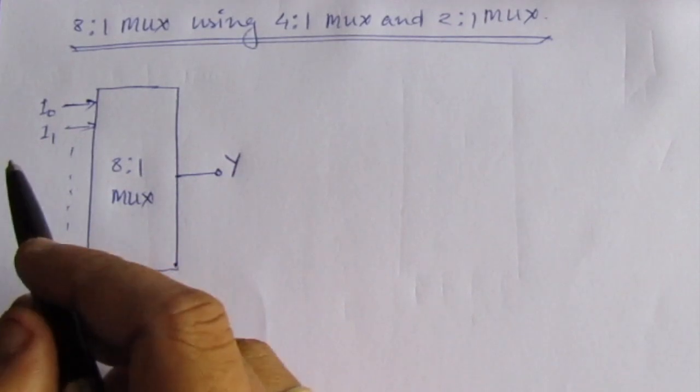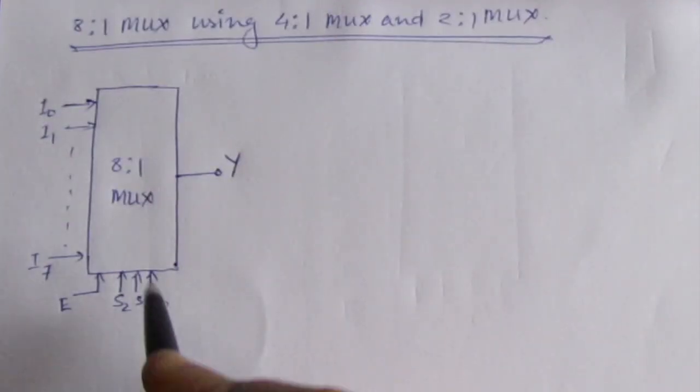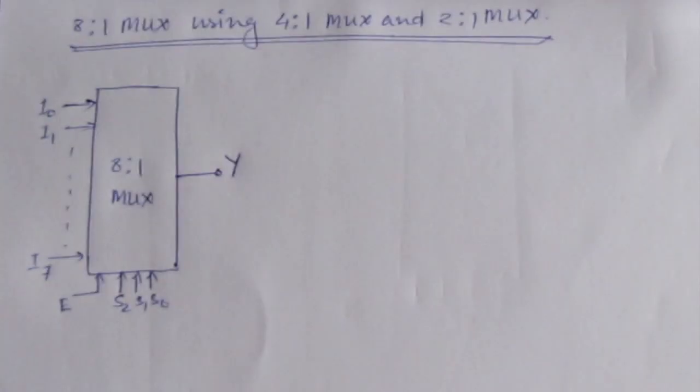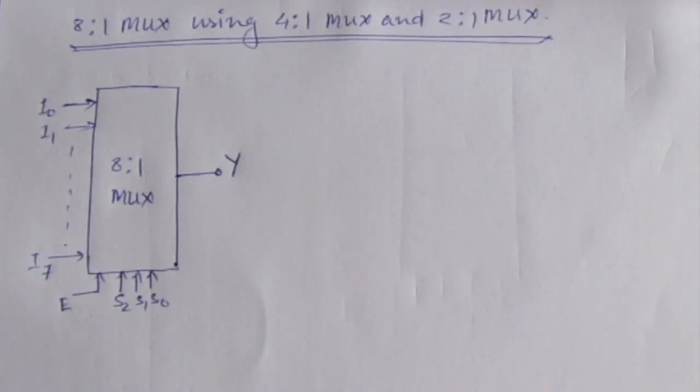In the last tutorial we saw how the 8-to-1 multiplexer is designed and how it operates. In an 8-to-1 multiplexer, we have 8 input data lines and one output data line. Depending on the select lines, any one of these input lines will be directed to the output port. Now we will see how to design an 8-to-1 multiplexer using two 4-to-1 multiplexers and one 2-to-1 multiplexer.